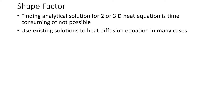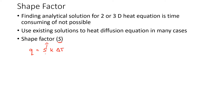So what are these existing solutions to the heat diffusion equation? They're called shape factors. Shape factor is denoted by uppercase S, and the heat transfer rate when you know the shape factor is given by S times the thermal conductivity times delta T, where S is the shape factor.